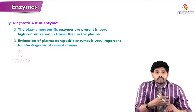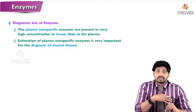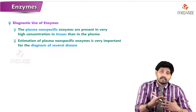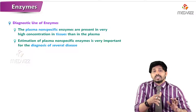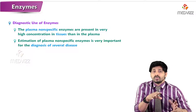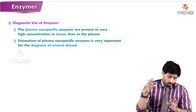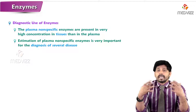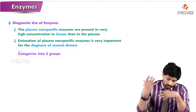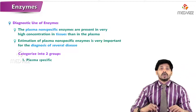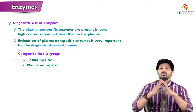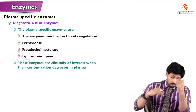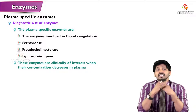In this video we'll be talking about the clinical significance of enzymes. In our previous videos we discussed isoenzymes and their clinical uses. Enzymes found in plasma can be categorized into two groups: plasma specific and plasma non-specific. The main difference between these two groups is important to understand.